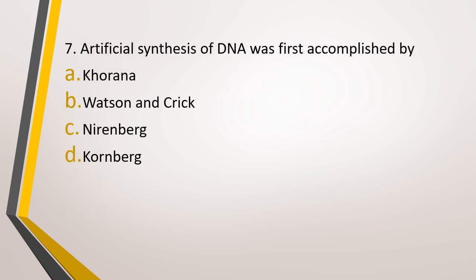Question number 7. The artificial synthesis of DNA was first accomplished by, option A: Khurana, option B: Watson and Crick, option C: Nirenberg, option D: Kornberg. The correct answer is option D, that is Kornberg.